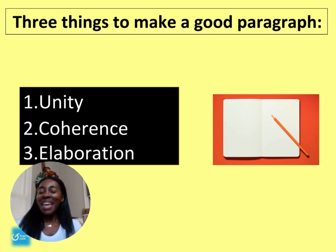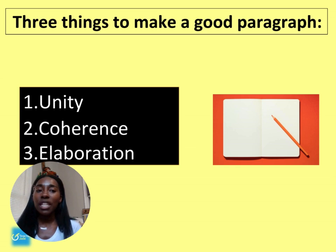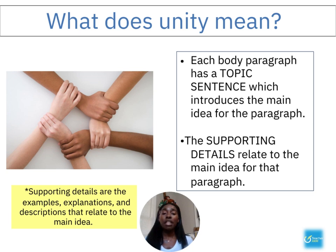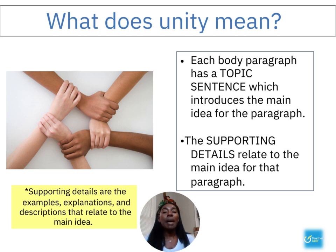Good paragraphs have three qualities: unity, coherence, and elaboration. Unity means each body paragraph has a topic sentence, which is the main idea for the entire paragraph. Within that paragraph, you include supporting details — your examples, explanations, and descriptions. That helps create unity.